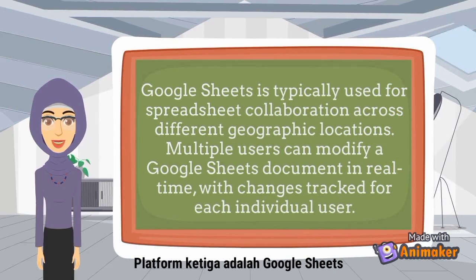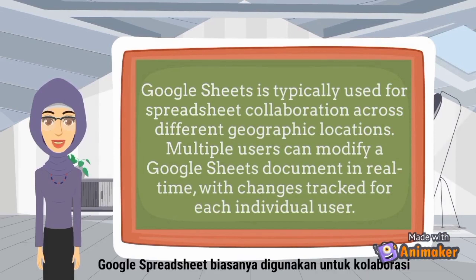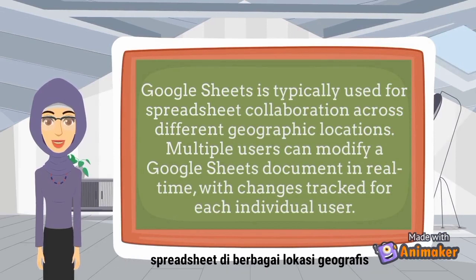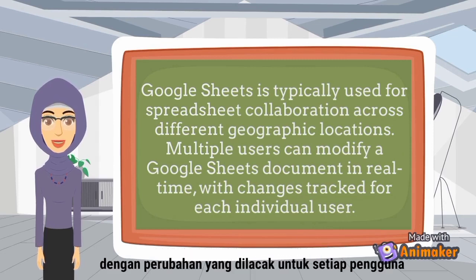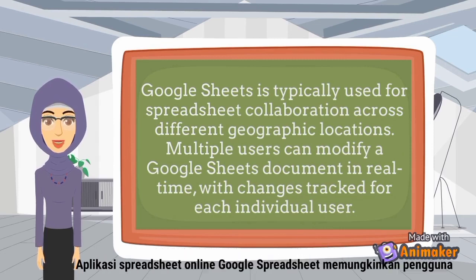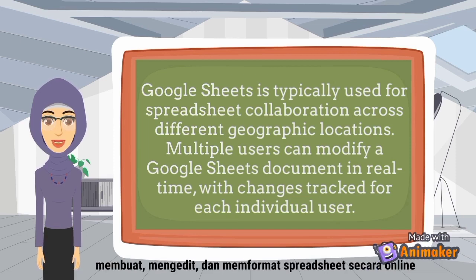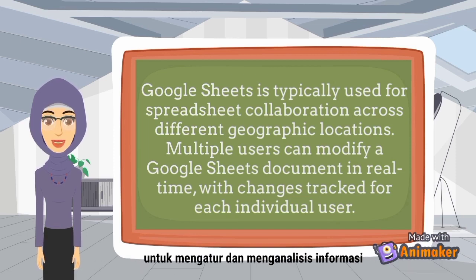The third platform is Google Sheets. Google Sheets is typically used for spreadsheet collaboration across different geographic locations. Multiple users can modify a Google Sheets document in real time, with changes tracked for each user. The online spreadsheet application enables users to create, edit, and format spreadsheets to organize and analyze information.